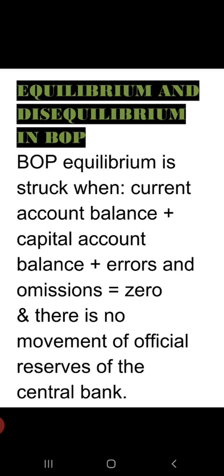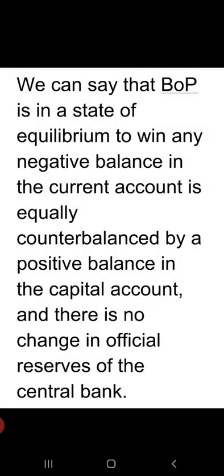BOP equilibrium is achieved when current account balance plus capital account balance plus errors and omissions equals zero. Whatever balance exists in the balance of payment — whether current account balance, capital account balance, or errors and omissions — if adding all of them gives zero and there is no movement of official reserves of the central bank, then it is the situation of BOP equilibrium.